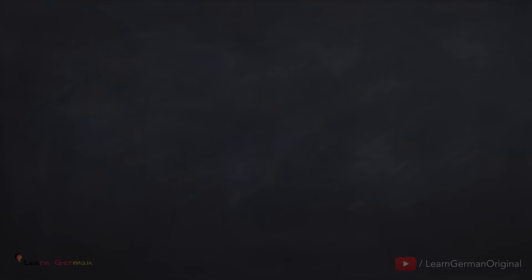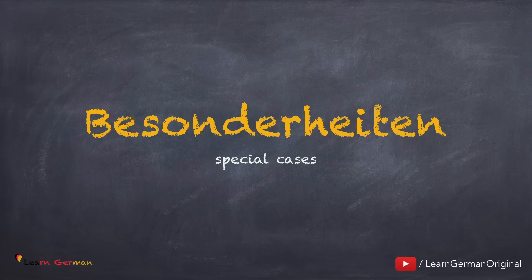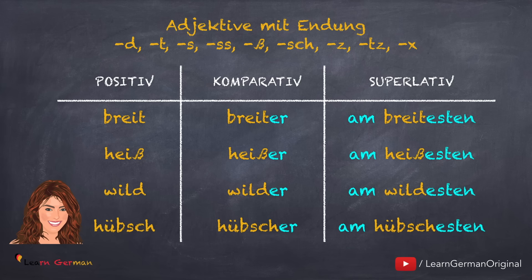We'll go through a few such adjectives — Besonderheiten. The first case is adjectives with these special endings. Und hier sind ein paar Beispiele: breit, breiter, am breitesten. Heiß, heißer, am heißesten. Wild, wilder, am wildesten.